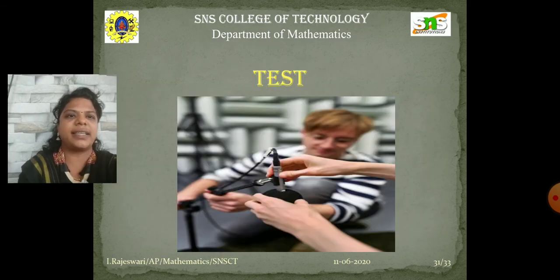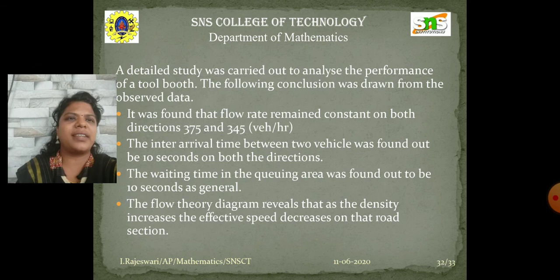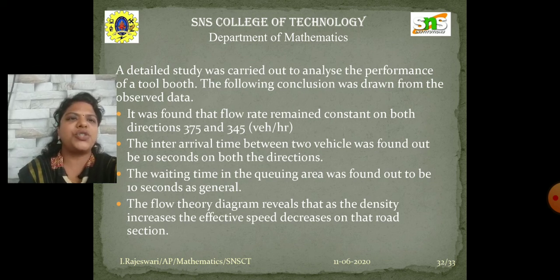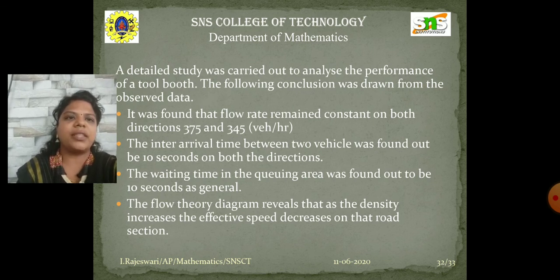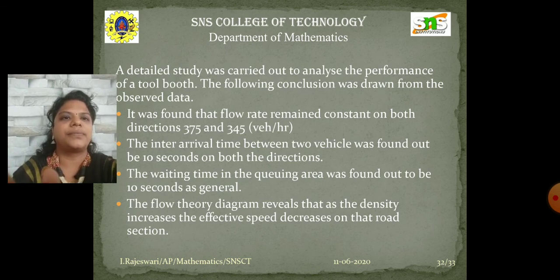Finally, the fifth stage is Test. A detailed study was carried out to analyze the performance of a toll booth. The following conclusions were drawn from the observed data: the flow rate remains constant on both directions at 375 and 345 vehicles per hour; the inter-arrival time between two vehicles was found to be 10 seconds on both directions; the waiting time in the queuing area was found to be 10 seconds in general; and the flow theory diagram reveals that as density increases, the effective speed decreases on that road section. Thank you.